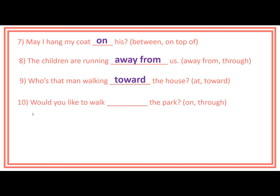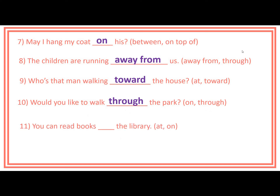Number 10: Would you like to walk ___ the park? The prepositions inside the bracket are on and through. Answer: Would you like to walk through the park? Number 11: You can read books ___ the library. Prepositions inside the bracket are at and on. Answer: You can read books at the library.